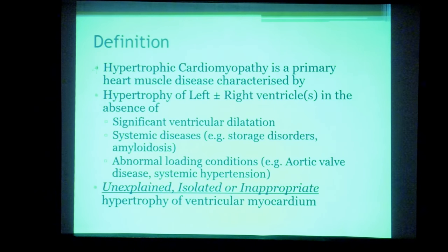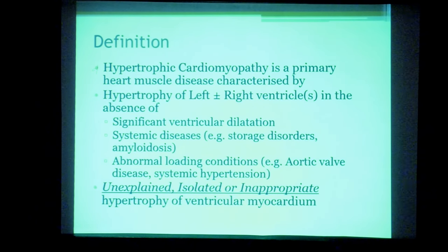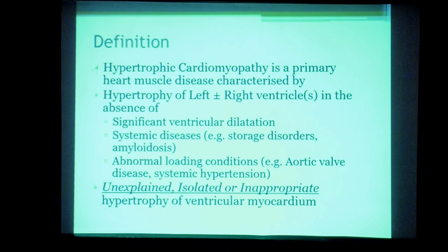Hypertrophic cardiomyopathy is a primary genetic heart muscle disease characterized by hypertrophy of the left and/or right ventricle in the absence of significant ventricular dilatation, in the absence of systemic diseases like storage disease or amyloid, and in the absence of abnormal loading conditions such as aortic valve disease or systemic hypertension. To summarize, it is an unexplained, isolated, or inappropriate hypertrophy of the ventricular myocardium.